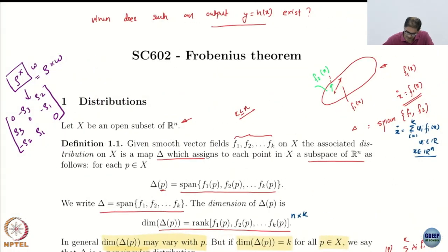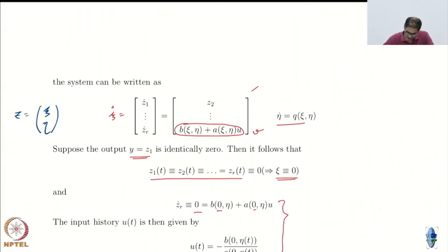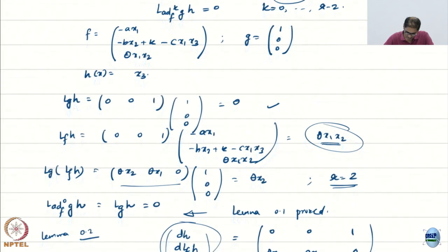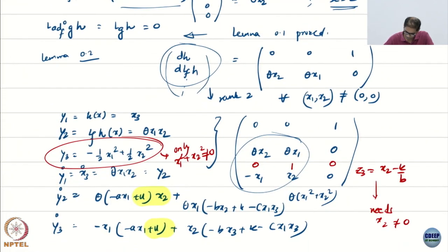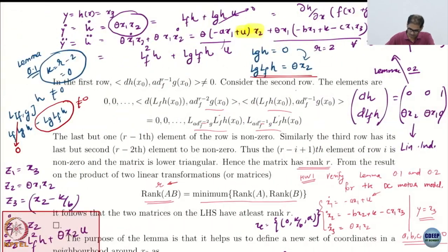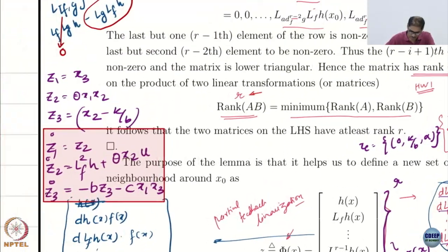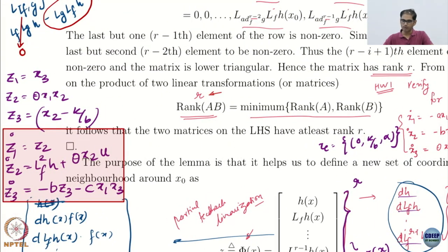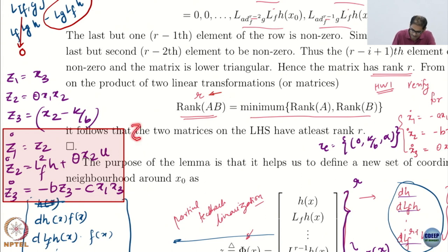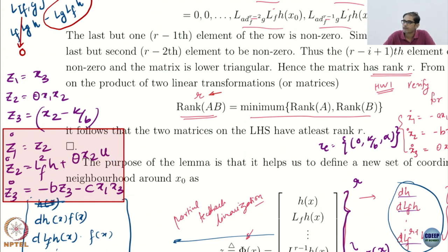Before going to Frobenius, let us go back to our example — the DC motor, the transformed dynamics, the Z-dynamics. Here, what was psi? Psi is the first two states, and this is eta.